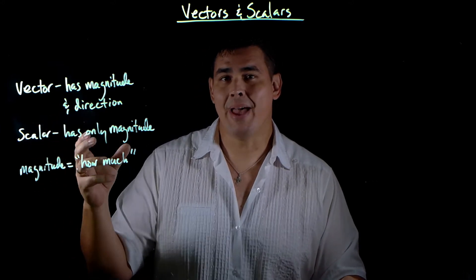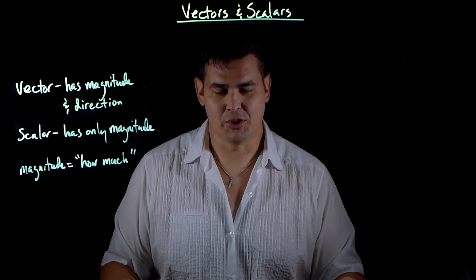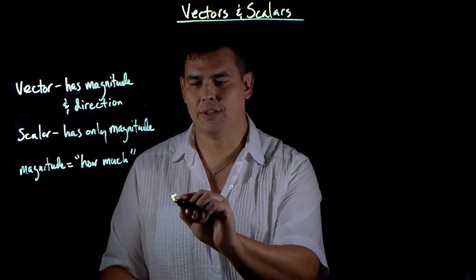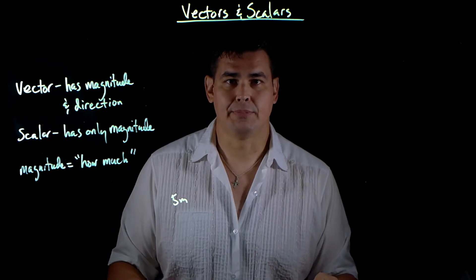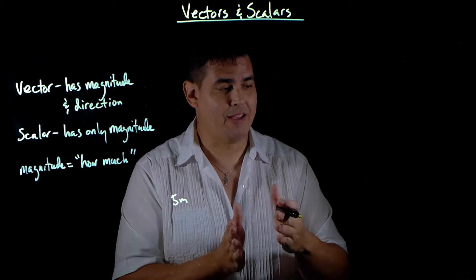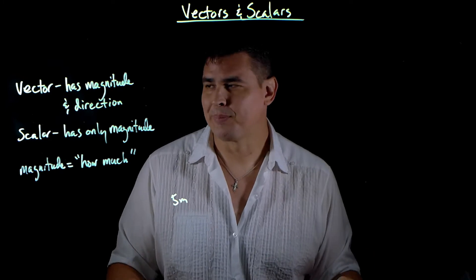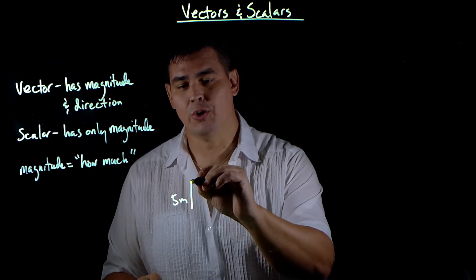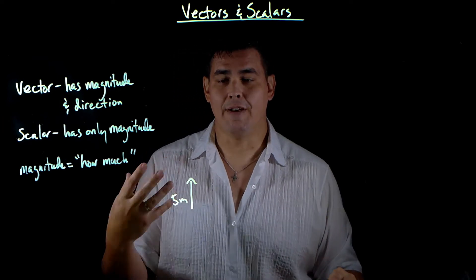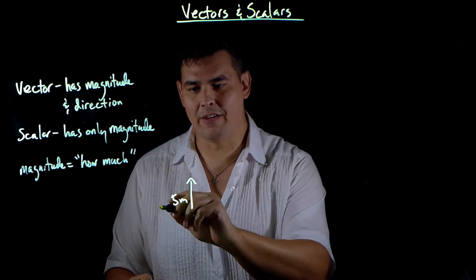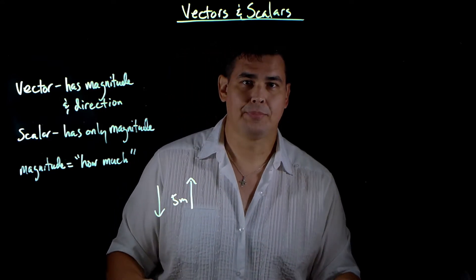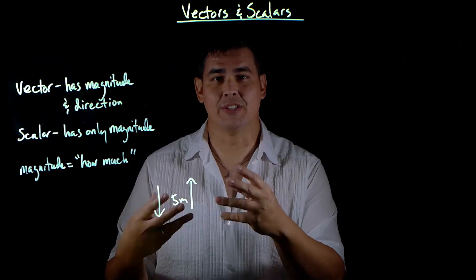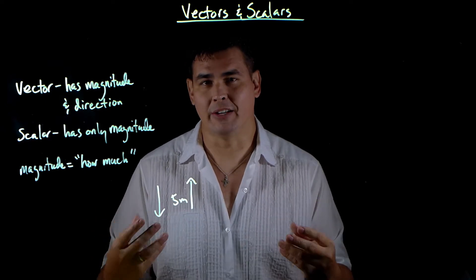A vector is something that has a magnitude and a direction attached to it. For instance, a scalar would be if I said I walked five meters — I didn't tell you where I walked. A vector would be if I said I walked five meters north, because five meters north is going to be different than walking five meters south. And when we get into things like momentum, energy, and forces, the direction something goes is going to matter. That's why we talk about vectors.